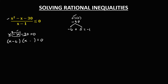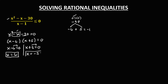So we have negative 6 and positive 5. Then equate these factors to 0: x minus 6 equals 0, then x plus 5 equals 0, and to solve for x, transpose, that's positive 6 and negative 5. Then for the denominator, x minus 1 equals 0, so therefore x is equal to positive 1. So these are the critical values: positive 1, positive 6, and negative 5.